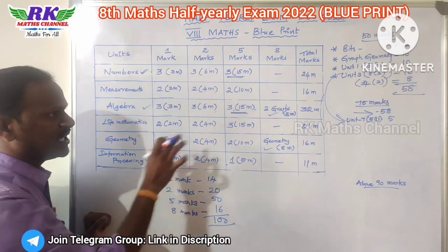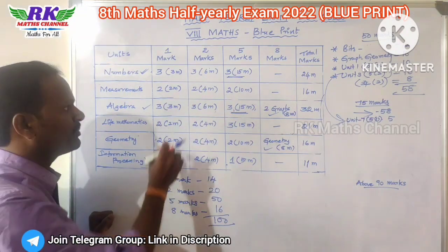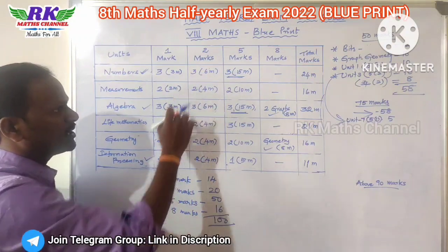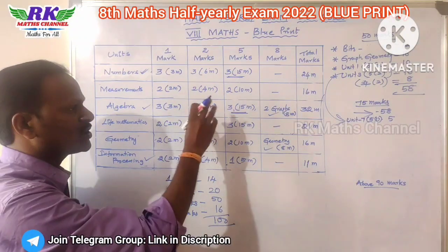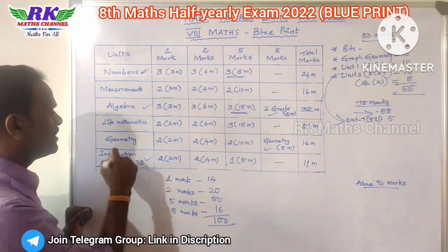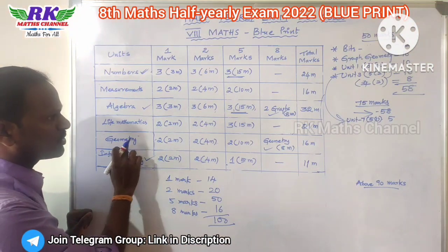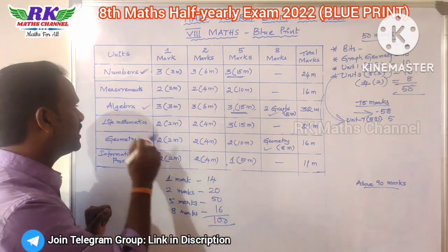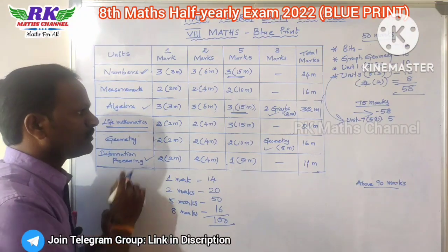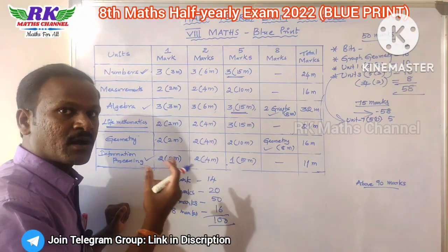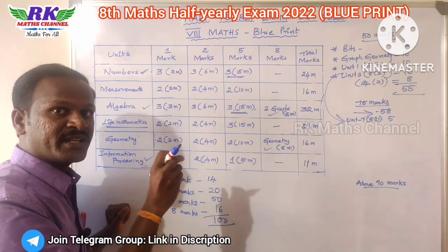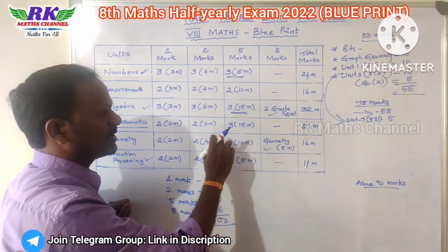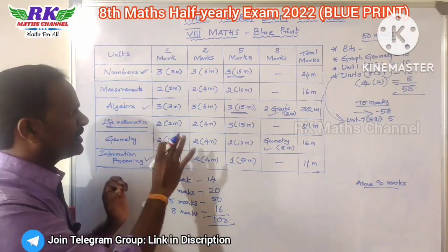If you look at this, you can get 75 marks. You do 3–5 mark questions and 2 mark questions. But you should have no mistakes. For geometry, practice the Pythagoras theorem. In Life Mathematics, there is a topic of Compound Variation. In the second chapter there is Compound Variation and Time and Work.